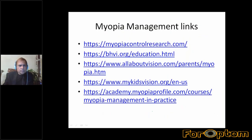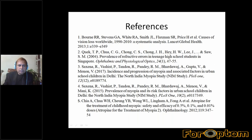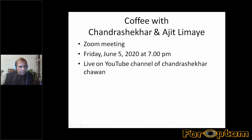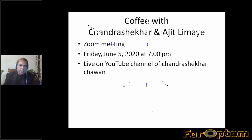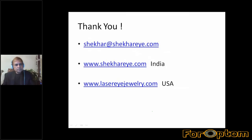The most important thing is more than 2.5 hours of outdoor time, lifestyle modification, and good eating habits — you can apply this from day one. Then you have orthokeratology, low-dose atropine, multifocal soft contact lenses, and myopia control spectacles. Avoid continuous close work — after 45 minutes, give a gap of 5-10 minutes and look at a distance. Try to avoid close work after sunset. There are important links online to learn, get certified, and incorporate myopia control into your practice. We are also scheduling a Zoom meeting next Friday at 7 o'clock called 'Coffee with Chandrasekhar and Ajit Lime' if you are interested in a more practical conversation. Thank you very much.